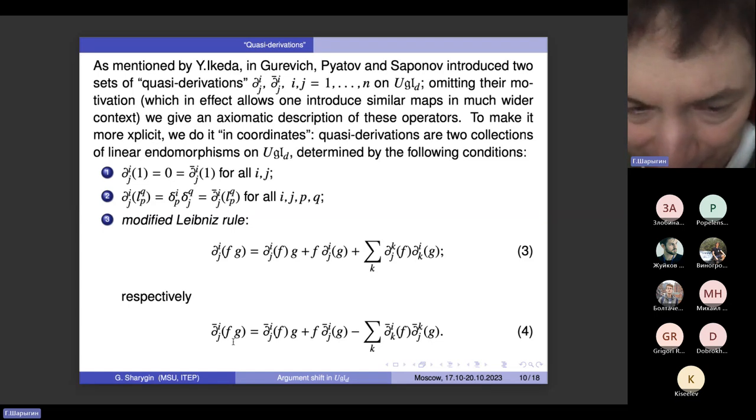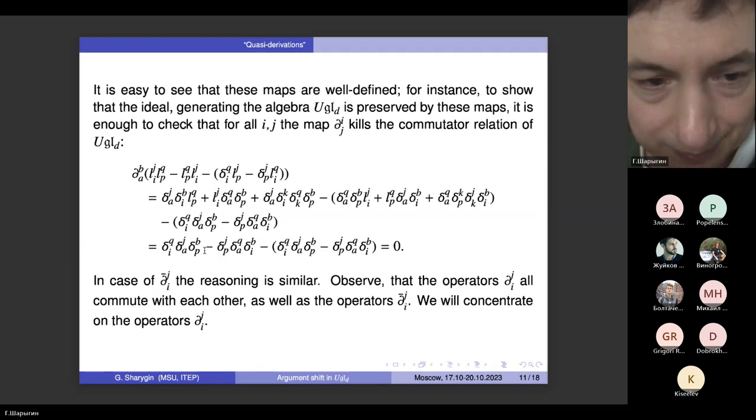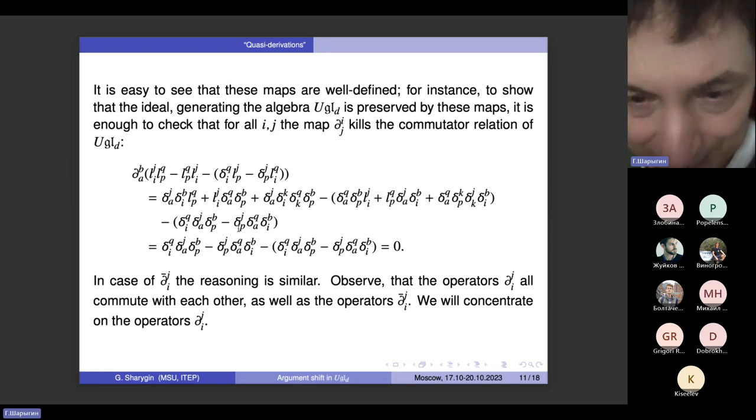You can do this in two different ways, and this gives you two different sets of quasi-derivations. We will concentrate on the first type, but the second type is by no means worse. So you can actually show that these operators are well defined. Here is a very short check: when you apply these operators to the generating relations on UGLD, these generating relations actually vanish. It's just straightforward computation. As you can see, nothing difficult there. Anybody can do this.